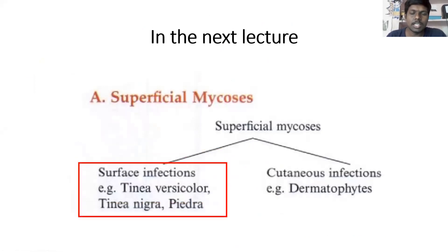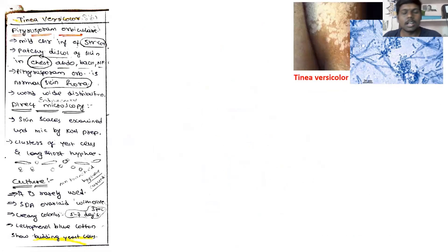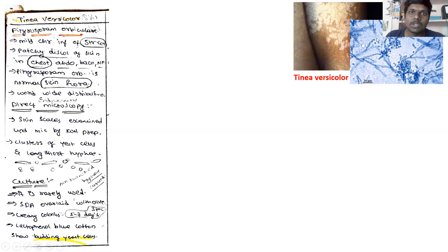So what are the three types of surface infections we have? They are Tinea versicolor, Tinea nigra, and Piedra. Tinea versicolor is an infection caused to the skin that will result in discoloration of the skin. It is caused by the fungus Pityrosporum orbiculare.